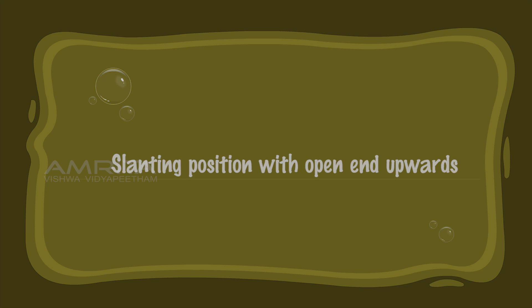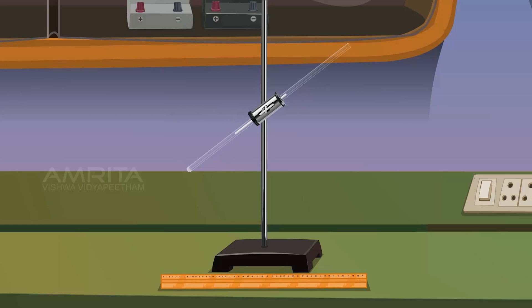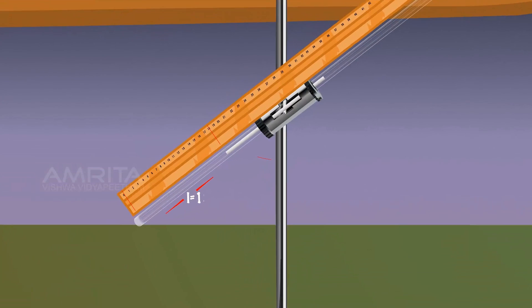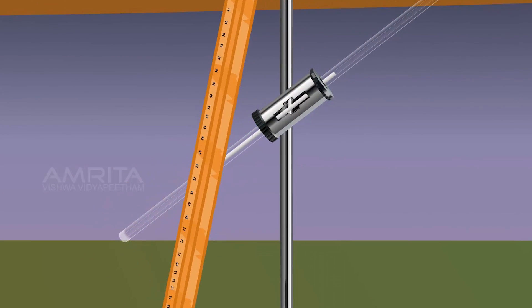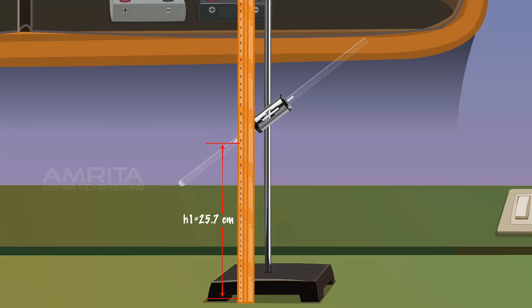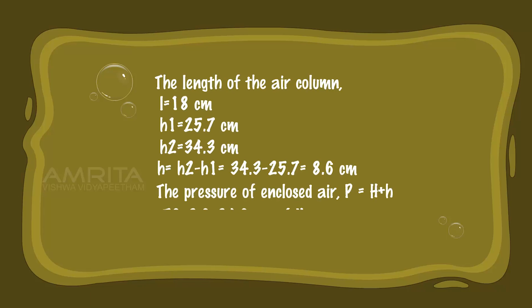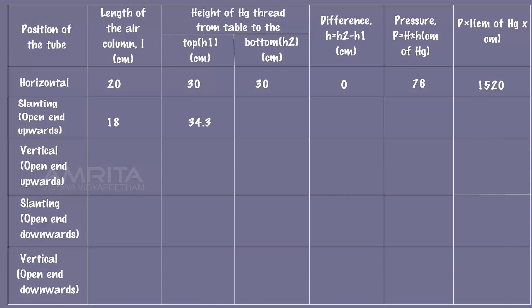Slanting Position with Open End Upwards: Place the quill tube in a slanting position with the open end upwards. Measure L, h1, and h2 using the meter scale. L = 18cm, h1 = 25.7cm, h2 = 34.3cm. Then h = h2 - h1 = 34.3 - 25.7 = 8.6cm. The pressure of enclosed air: P = 76 + 8.6 = 84.6cm of mercury. Record the observations and find P × L.